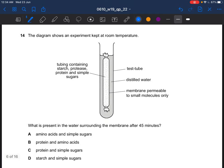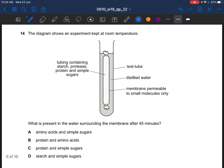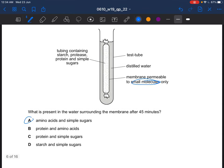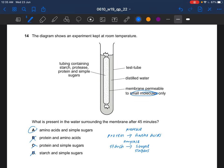Next question, the diagram shows an experiment kept at room temperature. What is present in the water surrounding the membrane after 45 minutes? They already stated that the membrane is permeable to small molecules only. So the answer would be A. Protein is not a small molecule, so it has to be broken down to amino acids using protease. Starch also has to be broken down to simple sugars using amylase.